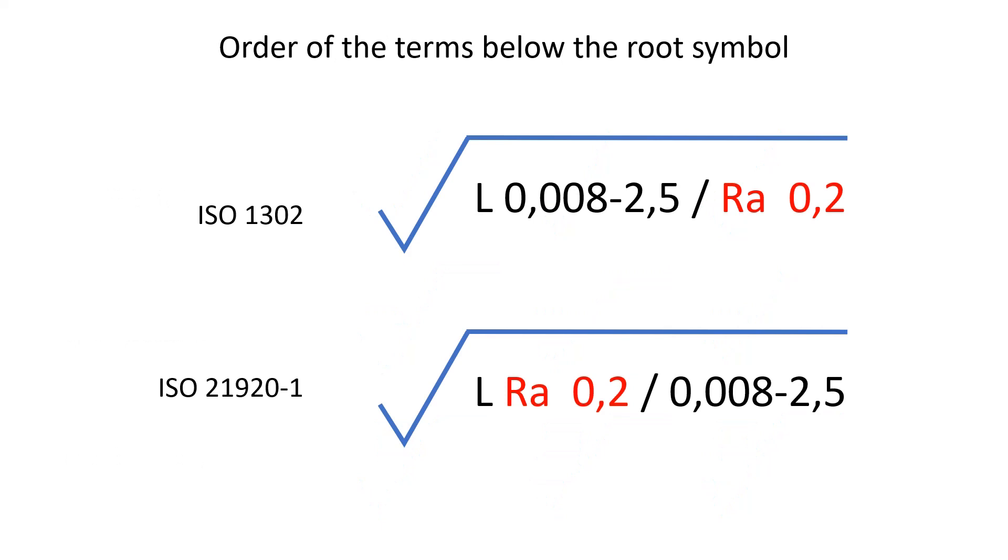Another important difference introduced in the new standard is the position of the parameter and its limit in the specification string. It is now moved to the front of the string, just after the tolerance type U or L. It clarifies the specification string, especially when the string is long. Now the parameter and its limit are in front of the line.